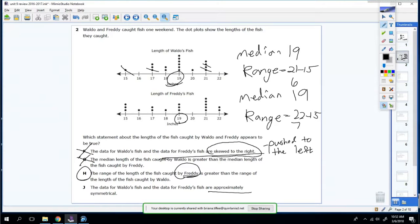And the last one, the data for Waldo's fish and the data for Freddy's fish are approximately symmetrical. What approximately means they're like perfectly symmetrical. So symmetrical means if I drew a line down their graph, they would have the same number on the left side and the same number on the right side. That's not true.